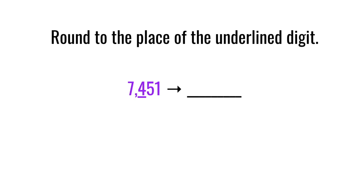What I like to do is circle the digit that we're rounding to and look next door. I'm circling the four and looking at the digit next to it, which is a five. Our rounding rules: if the digit next door is five or more, it tells the circled digit to go up one, but if the digit is four or less, it tells the circled digit to stay the same.